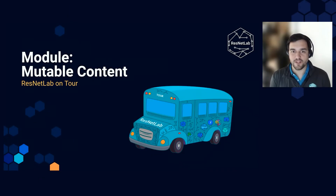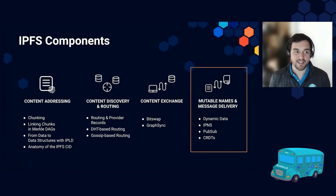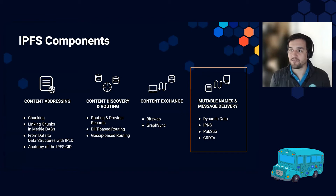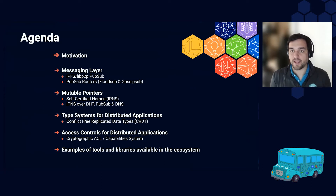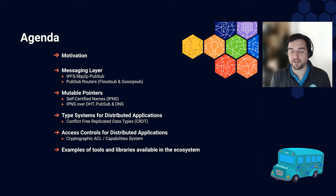Welcome everyone to the last module of the core modules — the module on mutable content. This module will be focused on the tail end, basically how to ensure that we have mechanisms to achieve mutability and mutable data on a distributed application. I'll start by unpacking and motivating why mutable data is important for distributed applications.